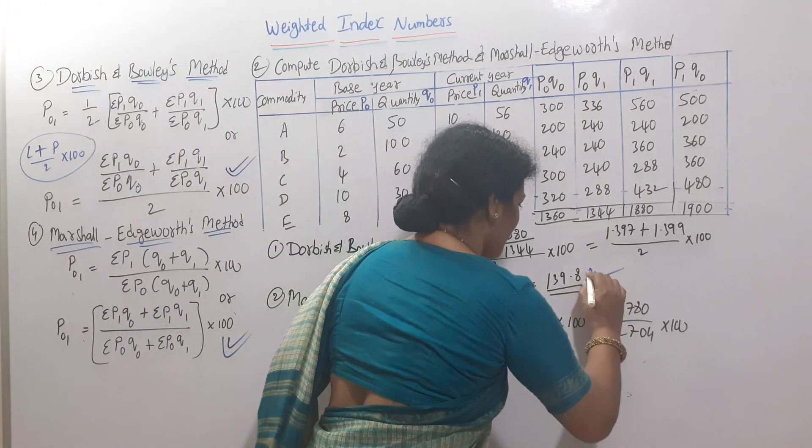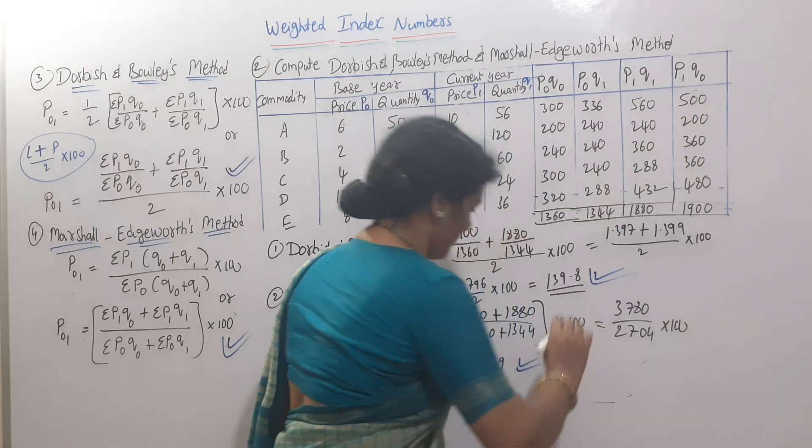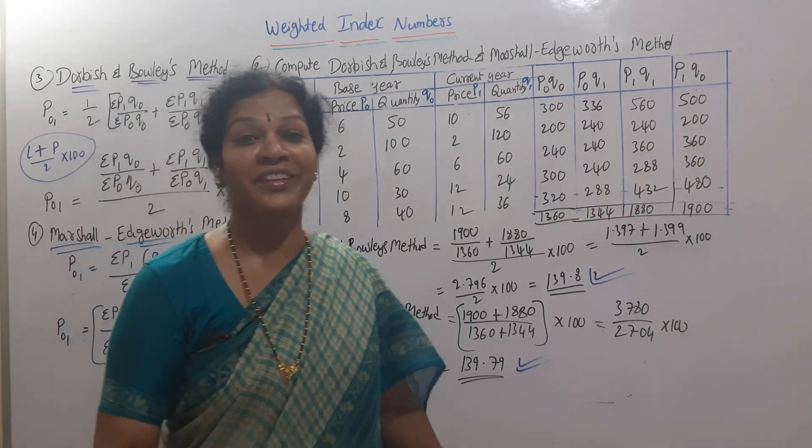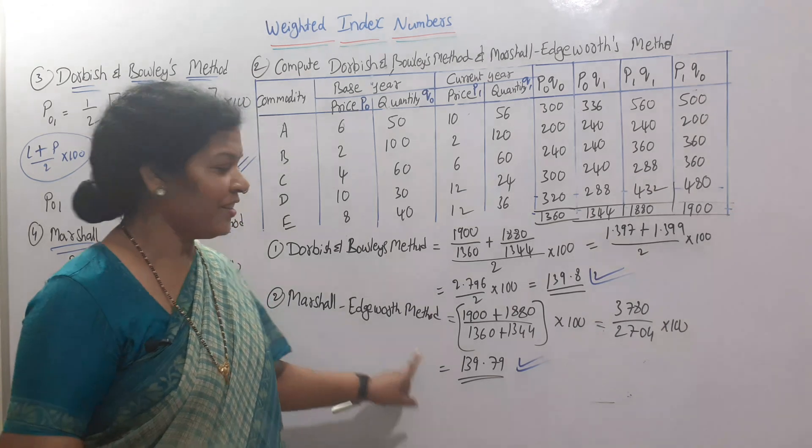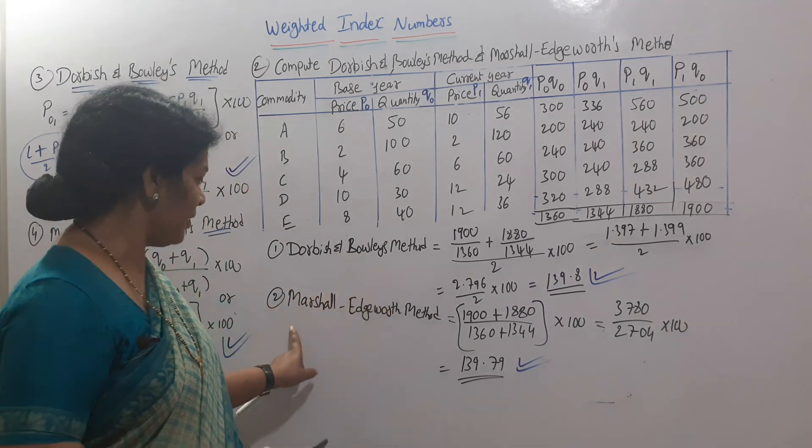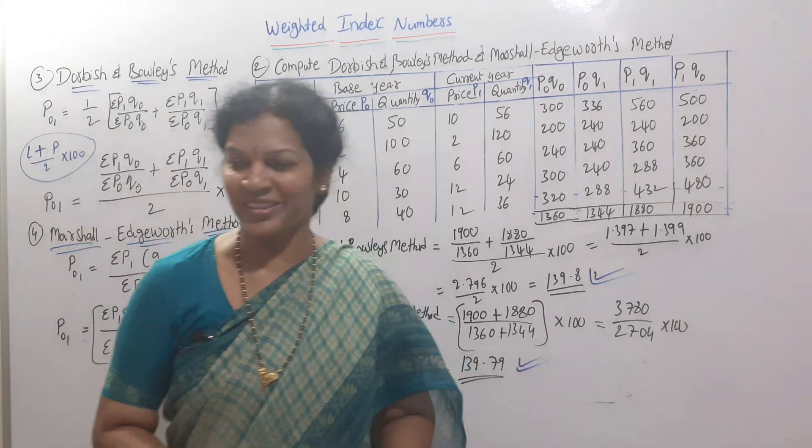Both answers are almost the same. So both answers are the same - Dorbish-Bowley method or Marshall-Edgeworth method.